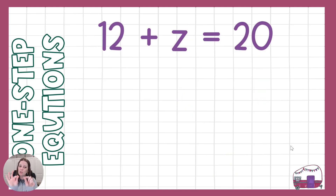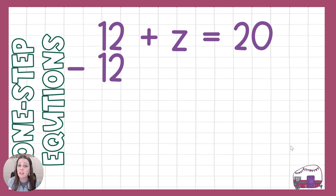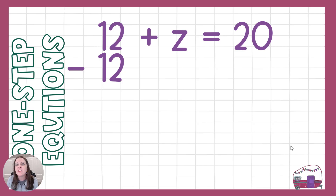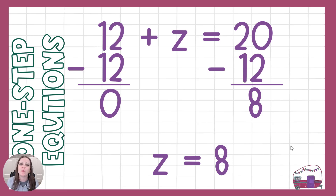Last equation in this set. This one looks just a tiny bit different — my variable and my constant have been switched, so my number comes first. But it's still a positive 12, and I go about removing it the same way with its opposite. The opposite of positive 12 is minus 12. Now everything isn't the same, so I go to the other side and do the same thing. 20 minus 12 is 8. I'm left with z equals 8. And I can plug that in to confirm: 12 plus 8 is in fact 20.